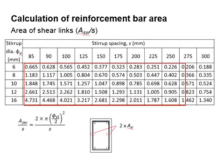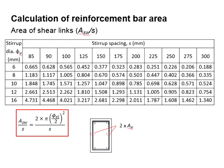This number represents a ratio of the area of the shear link divided by its spacing. It can be worked out by using this equation.